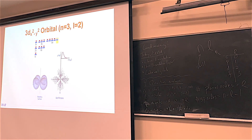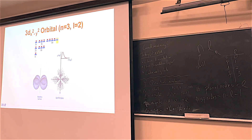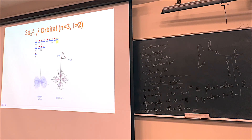This is the 3DX squared minus Y squared orbital. This one is right along the Y and the X axis. While the other ones were kind of between axes, this one is right in there. You don't need to know these details — I'm just showing pictures as a kind of family album for chemistry.